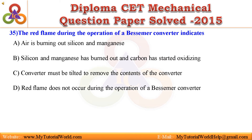Question 35. The red flame during the operation of a Bessemer converter indicates: A. Air is burning out silicon and manganese. B. Silicon and manganese has burned out and carbon has started oxidizing. C. Converter must be tilted to remove the contents of the converter. D. Red flame does not occur during the operation of a Bessemer converter. Answer is: D. Red flame does not occur during the operation of a Bessemer converter.